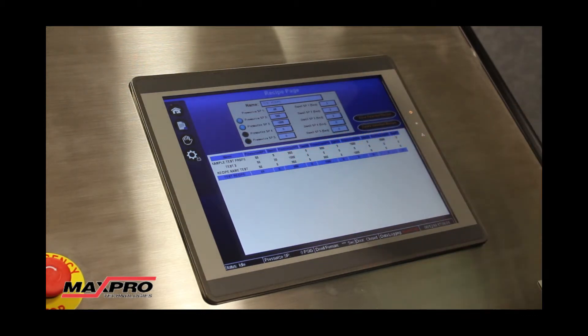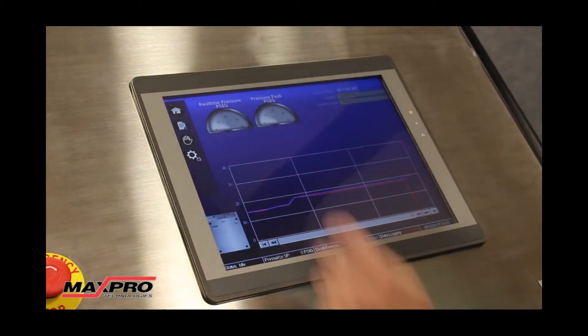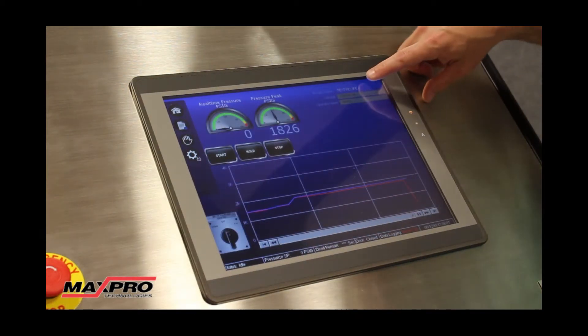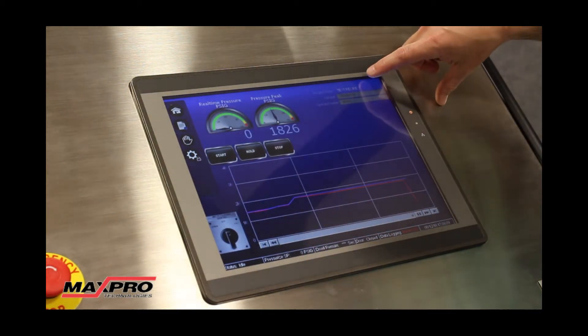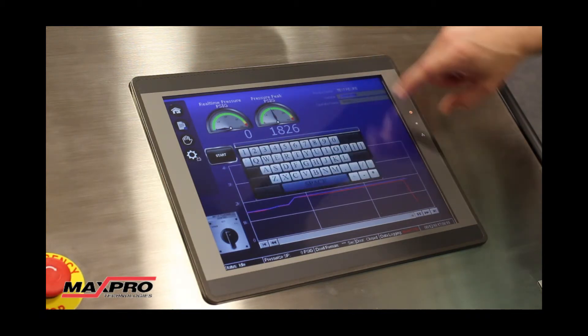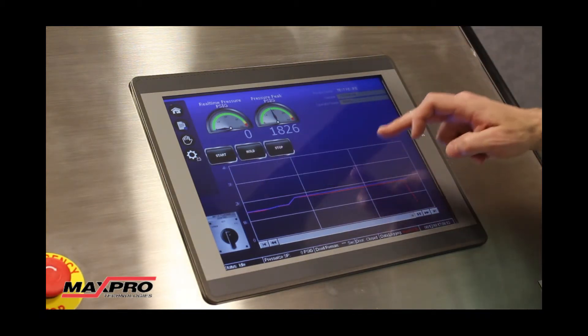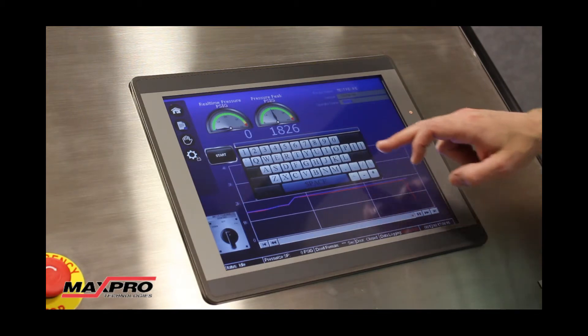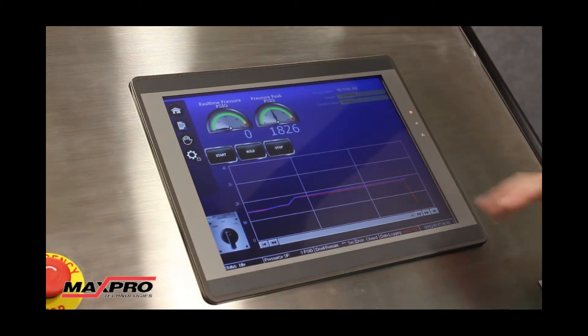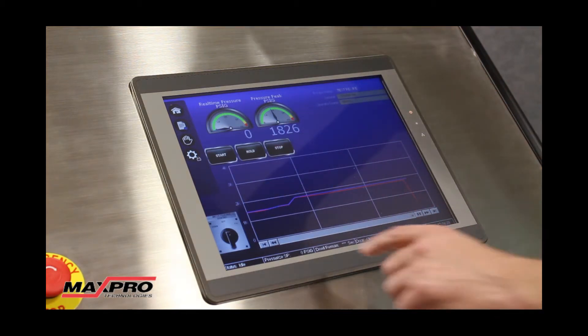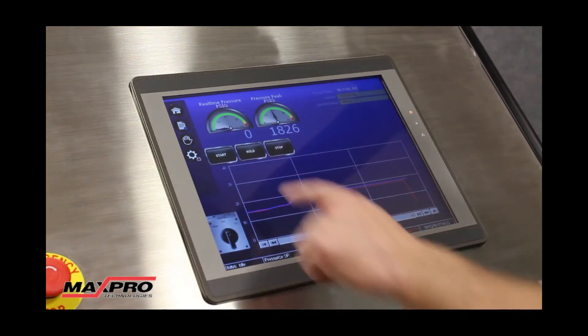It'll add it to the list down below and you can store up to 50 recipes on the system. Click the home button. You'll see that the test recipe is already on there because we've selected it on the previous screen. You can enter a serial number and an operator there as well. Once you're satisfied with the information, simply press start and it'll begin the test profile.